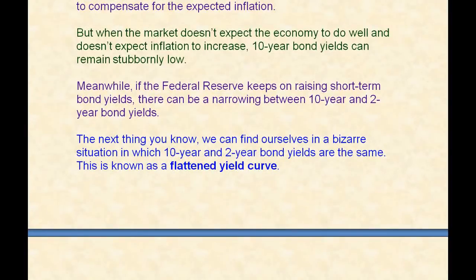Meanwhile, if the Federal Reserve keeps on raising short-term bond yields, which they've been doing, there can be a narrowing between the 10-year and the 2-year bond yields — they can get closer together. The next thing you know, we can find ourselves in a bizarre situation in which 10-year and 2-year bond yields are the same. This is known as a flattened yield curve — when the 10-year and 2-year bonds pay the same percentage.